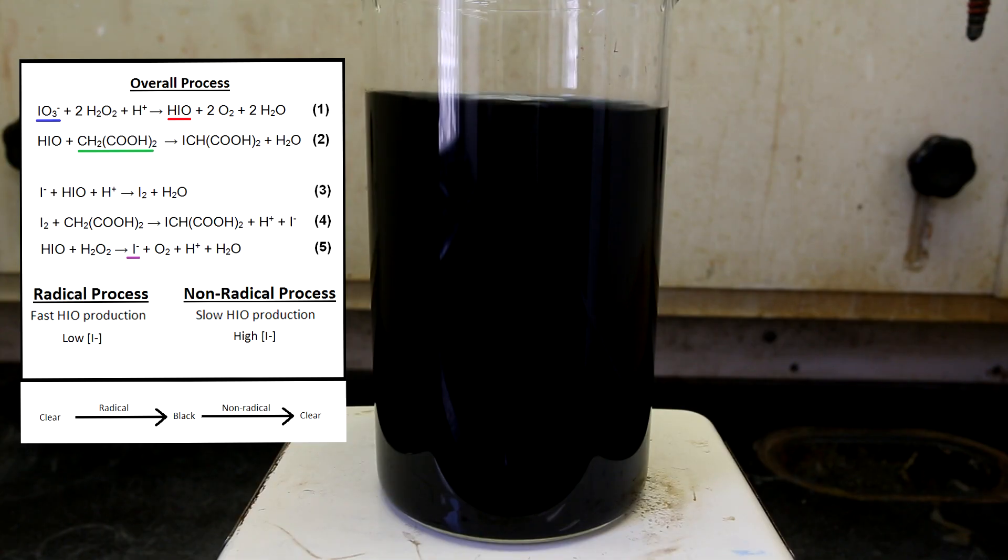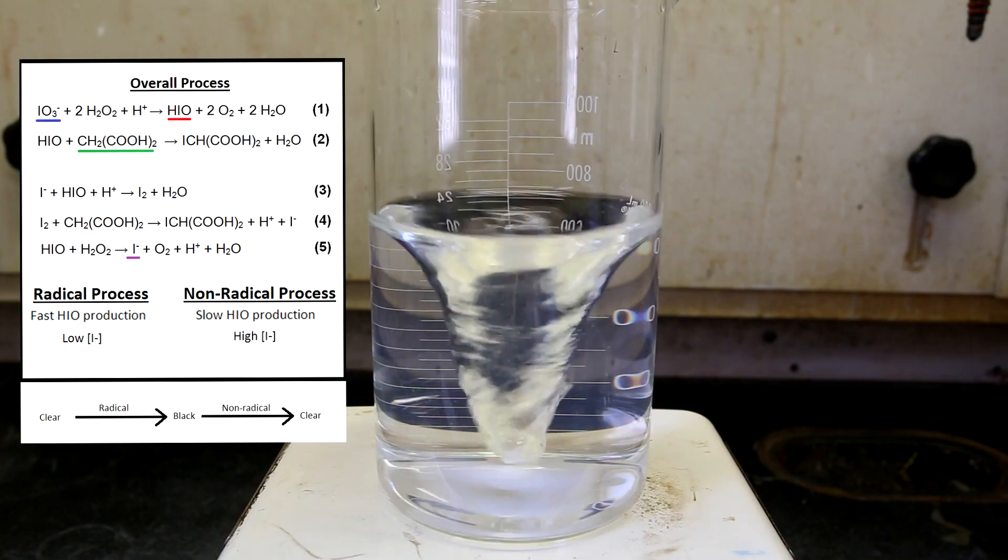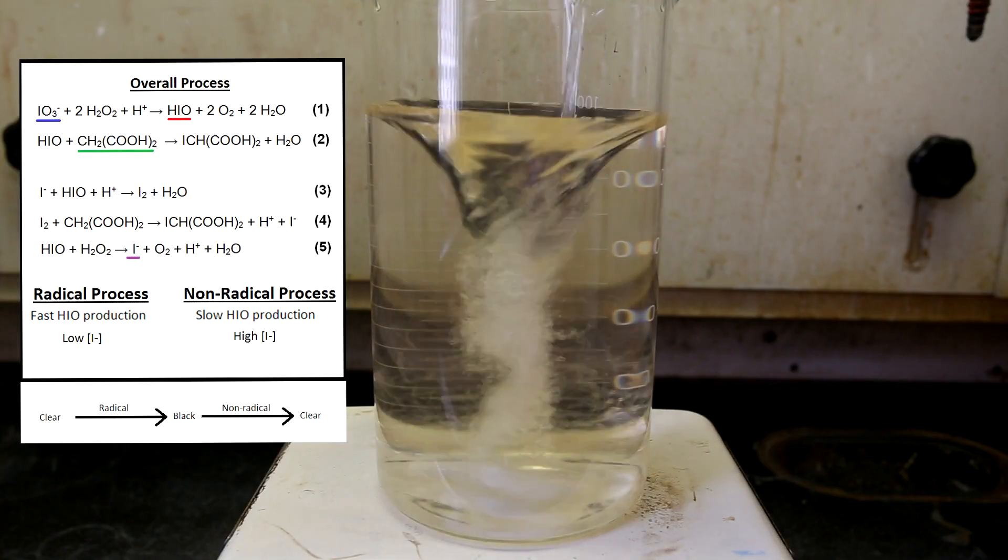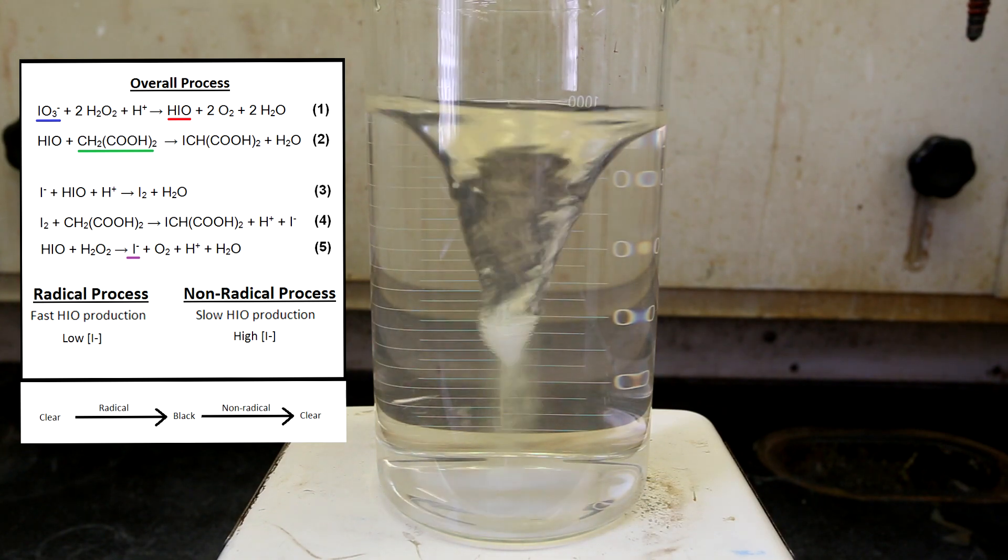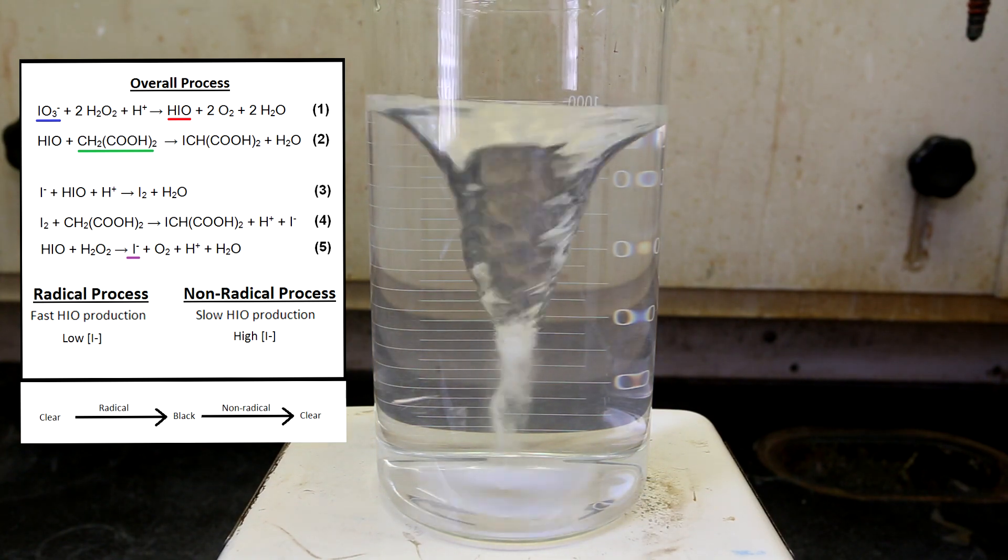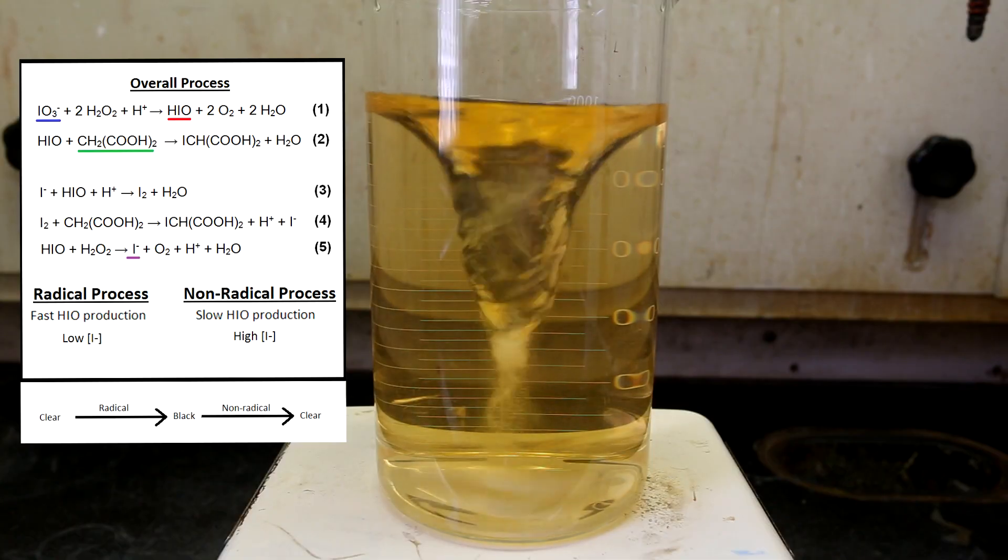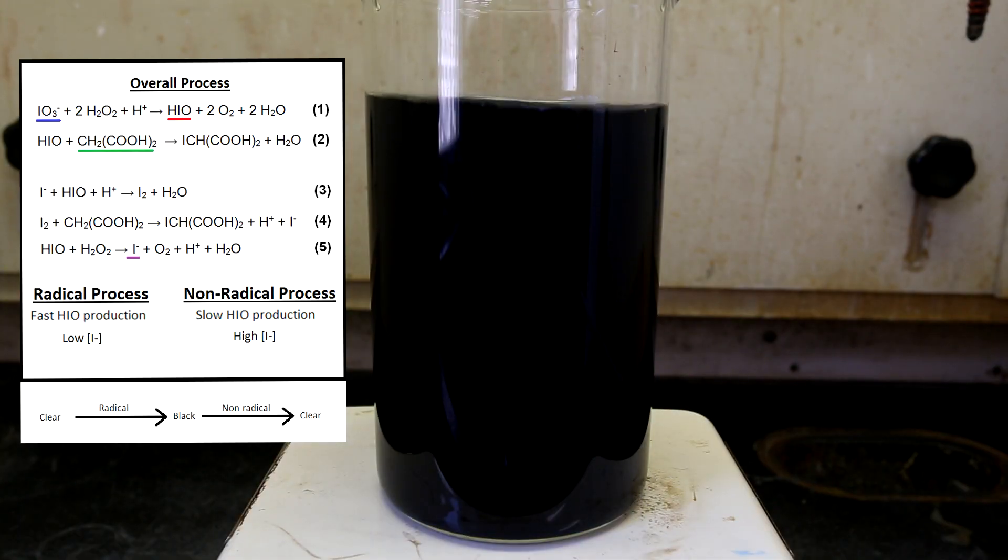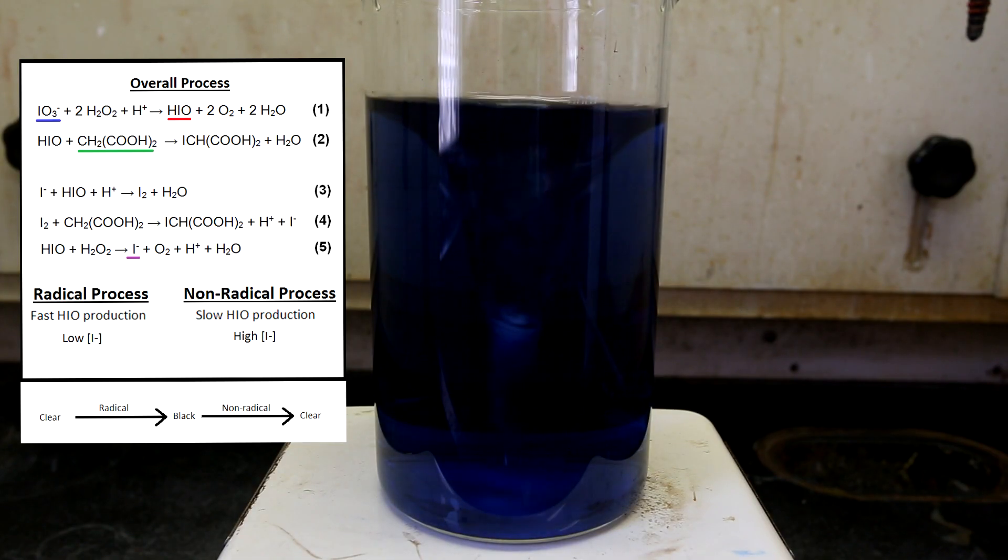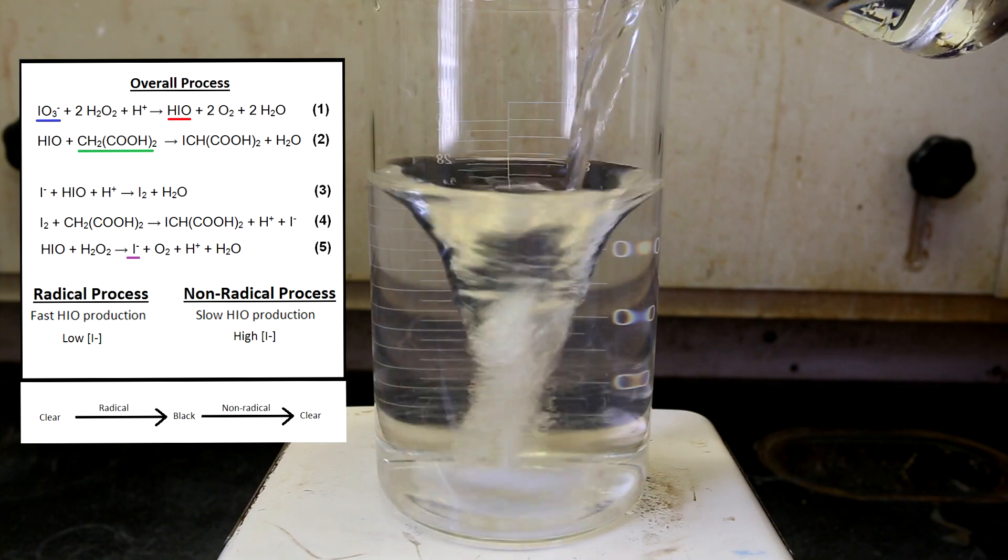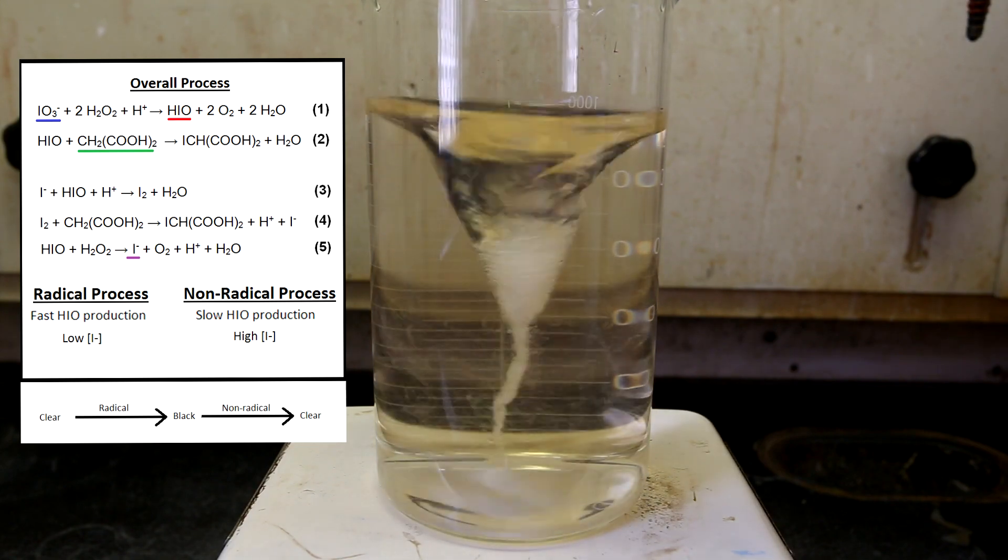Now that the radical process has shut down, the non-radical one will take over. In the non-radical process, the iodide ion reacts with the iodate ion to ultimately form hypoiodous acid. However, as I said before, this process is quite slow and the hypoiodous acid is consumed by malonic acid as fast as it is produced. Because there is not an excess of hypoiodous acid produced, we cannot regenerate the iodide ion like we did before as shown in equation 5. Because of this, the concentration of iodide in solution starts to decrease. The decrease in iodide concentration causes the starch complex to break apart. As more and more starch complex breaks apart, the solution goes from a very dark black color and slowly changes to blue.